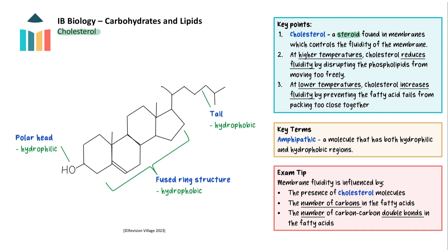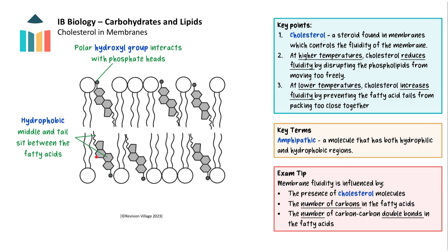Cholesterol is a steroid and has a completely different structure to triglycerides and phospholipids. It has a polar head group, a fused ring structure in the middle, and a flexible non-polar tail. It is found in membranes with its polar hydroxyl group interacting with the phosphate heads, and the hydrophobic middle and tail sitting between the fatty acid tails of the phospholipids. At higher temperatures, cholesterol reduces membrane fluidity by disrupting the phospholipids from moving too freely. At lower temperatures, cholesterol increases fluidity by preventing the phospholipid tails from packing too closely together. Cholesterol is also used to form steroid hormones such as estrogens including estradiol and testosterone. Steroid hormones can pass through the cell membrane to reach their target receptor site inside the nucleus.